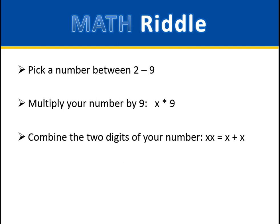Now combine the two digits of that number. So for example, if your number was 42, you would add 4 plus 2 equals 6.